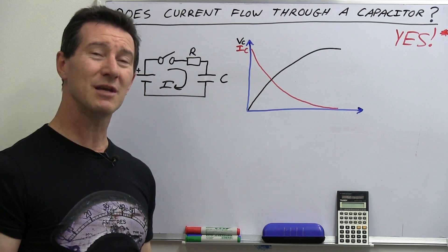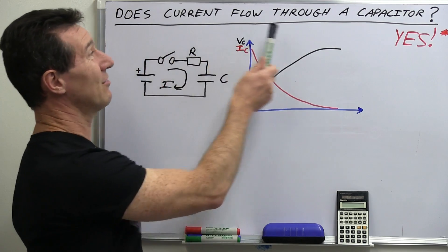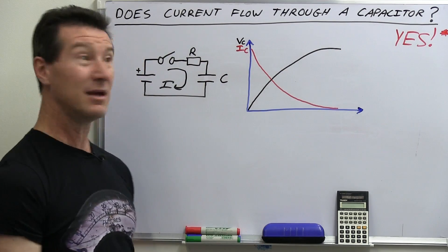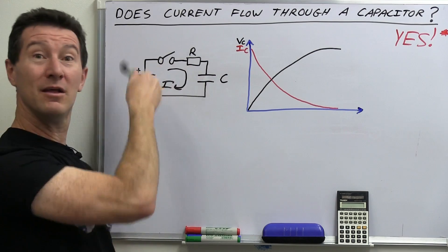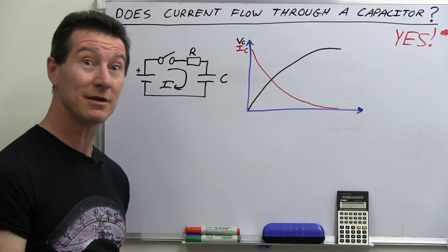So the answer to this question seems bleedingly obvious. Does current flow through a capacitor? Yes, I see. Look, current is flowing in that loop. It's in series. How else? Where else can it go but through that capacitor?